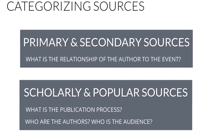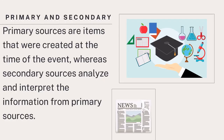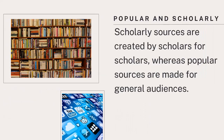Typically, researchers categorize sources into two distinctions: primary and secondary sources, and scholarly and popular sources. Primary sources are items that were created at the time of the event, whereas secondary sources analyze and interpret the information from primary sources. Scholarly sources are created by scholars for scholars, whereas popular sources are made for general audiences.